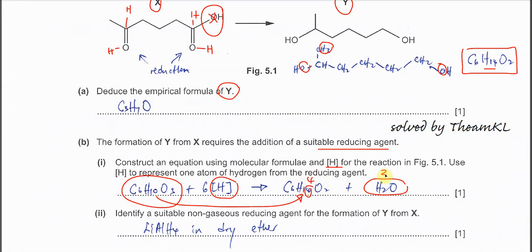So counting the total hydrogens needed: 4 hydrogens to form Y and 2 hydrogens to form H2O, giving a total of 6 hydrogens required. This is the equation you must be able to produce.